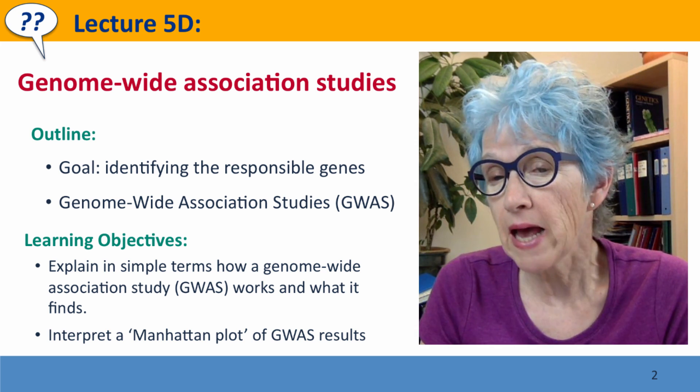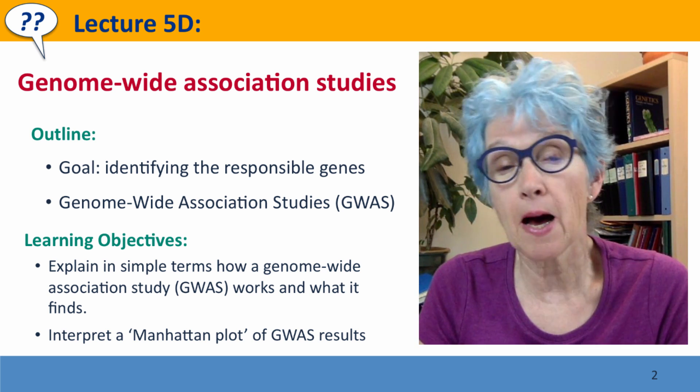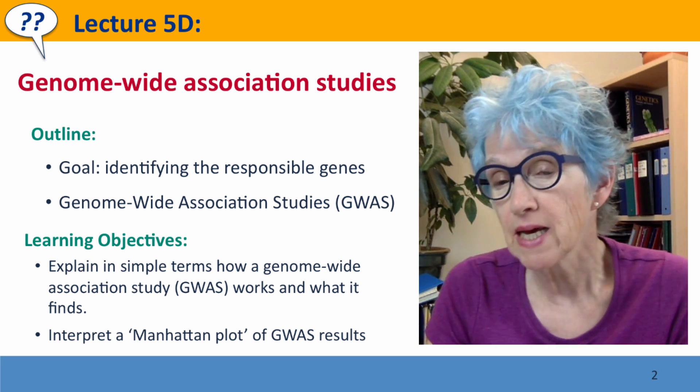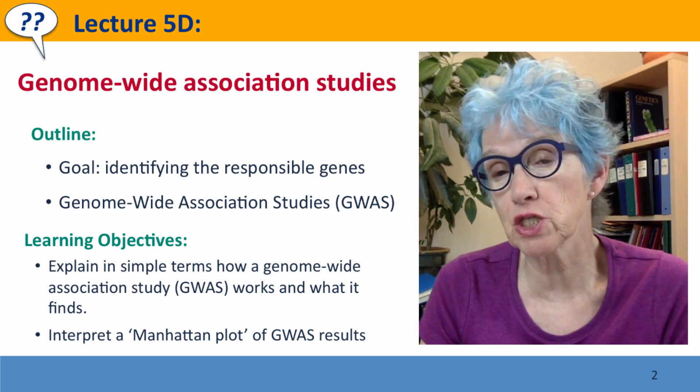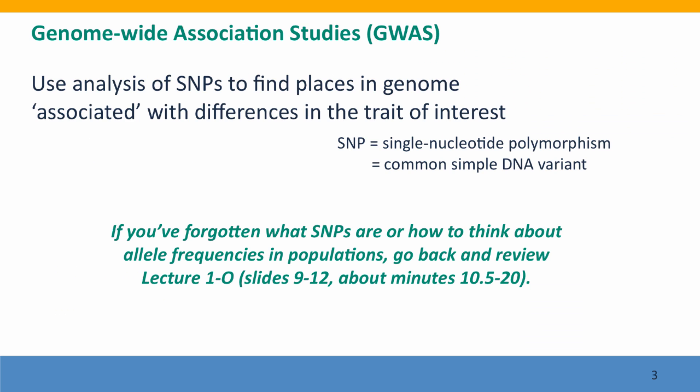This technique has been responsible for providing the information that personal genomics companies such as 23andMe use to associate SNP differences with differences in health risks. A genome-wide association study uses analysis of SNPs to find places in the genome that are associated with, linked to, or in some way causing differences in the phenotypic trait that we're interested in.